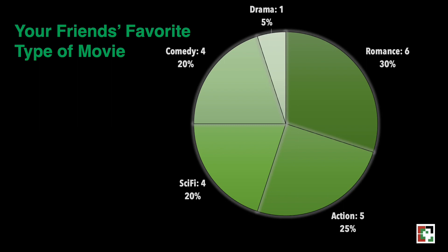Based on the circle graph or pie graph, we can conclude the following: Most of the students like to watch romantic movies. Movies that are drama in nature are least preferred. Comedy and sci-fi movies are preferred by two-fifths of your friends surveyed. And one-fourth of your friends like action movies.